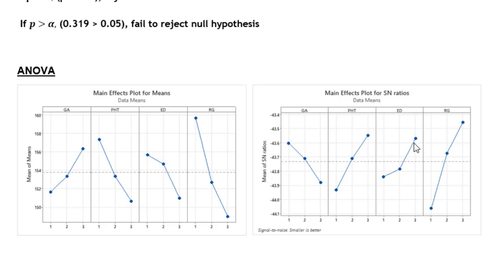Likewise, ED at level 3 resembles this point that's the least one, and RG level 3 is giving us the minimum value. You can see here the minimum or least of the mean value.